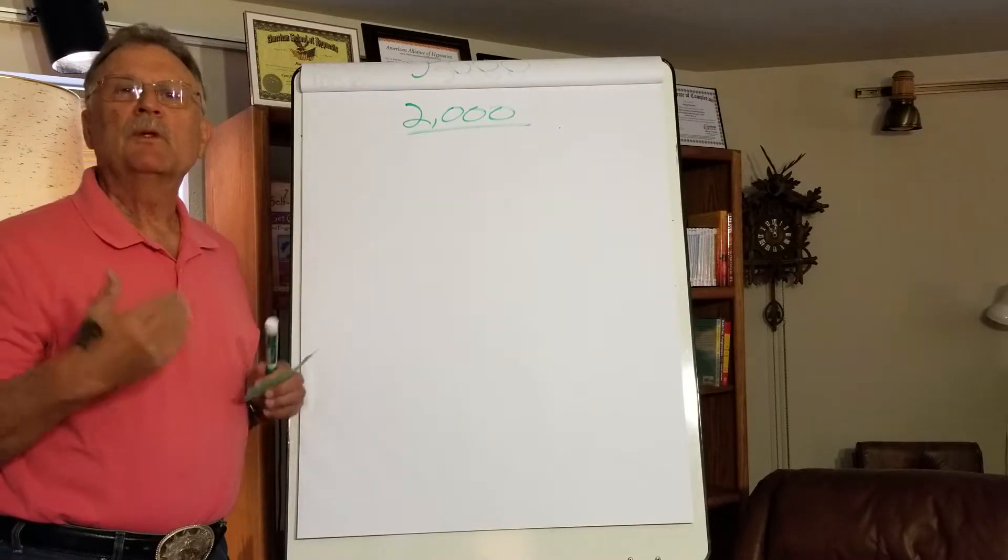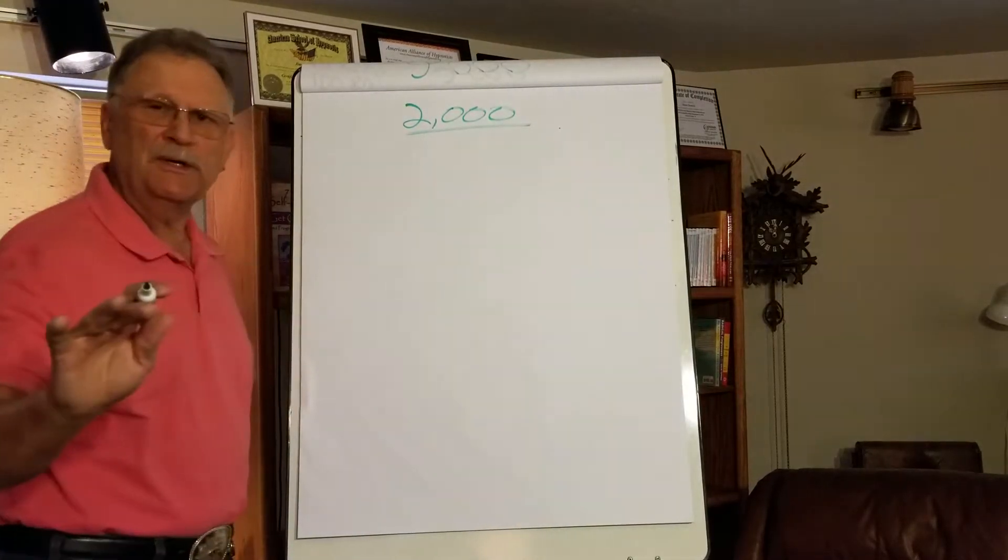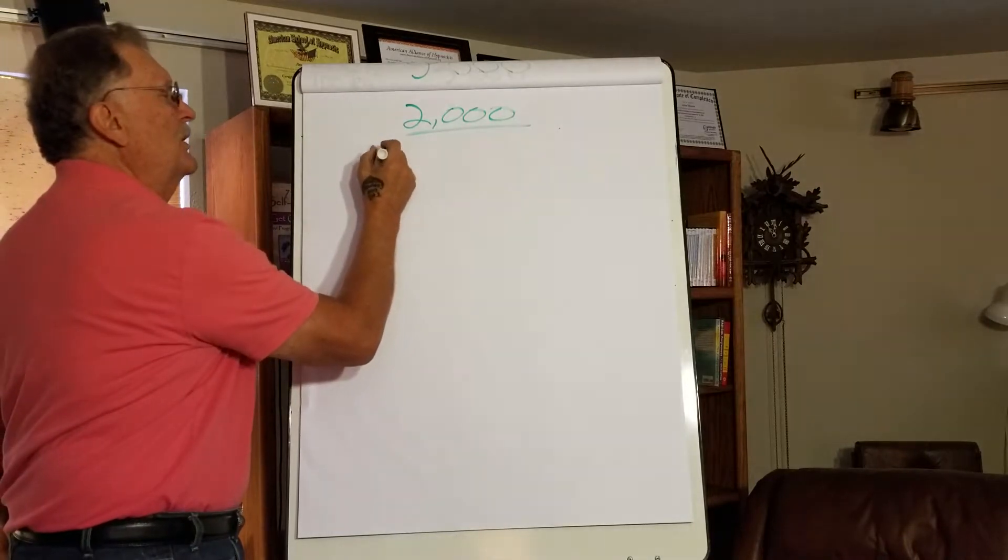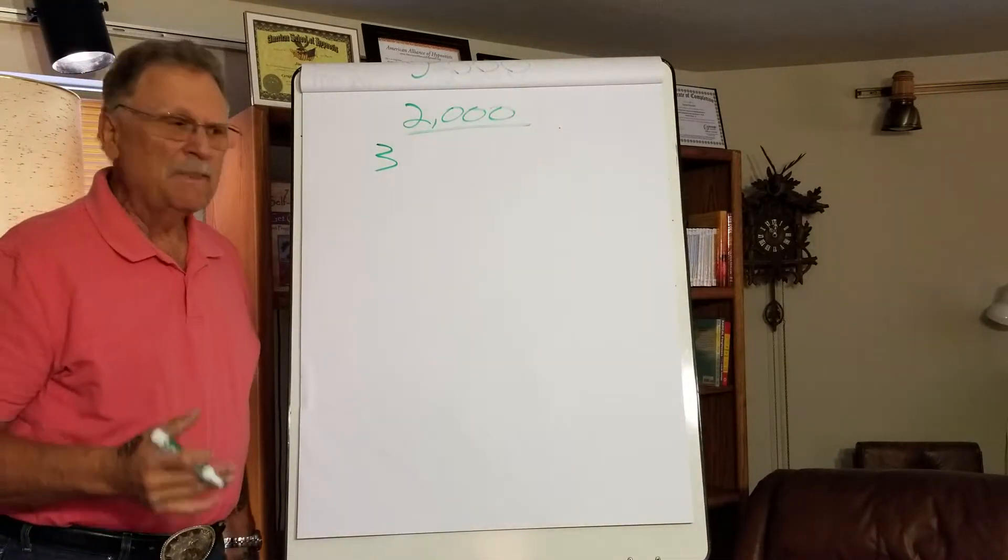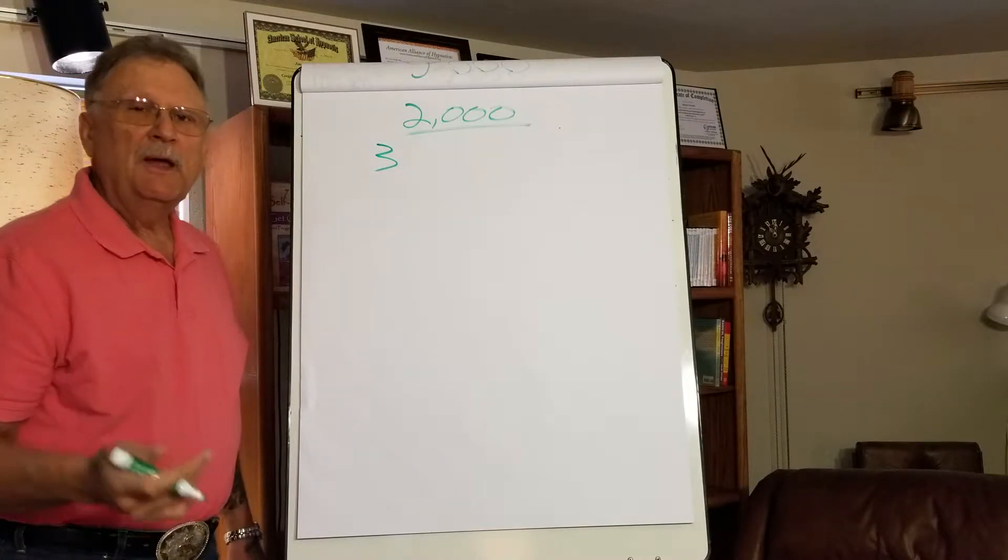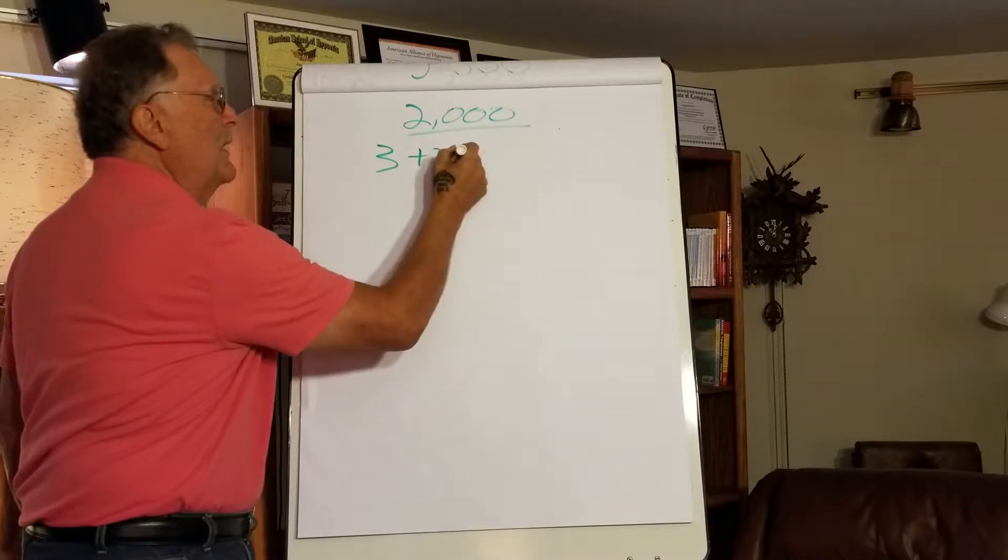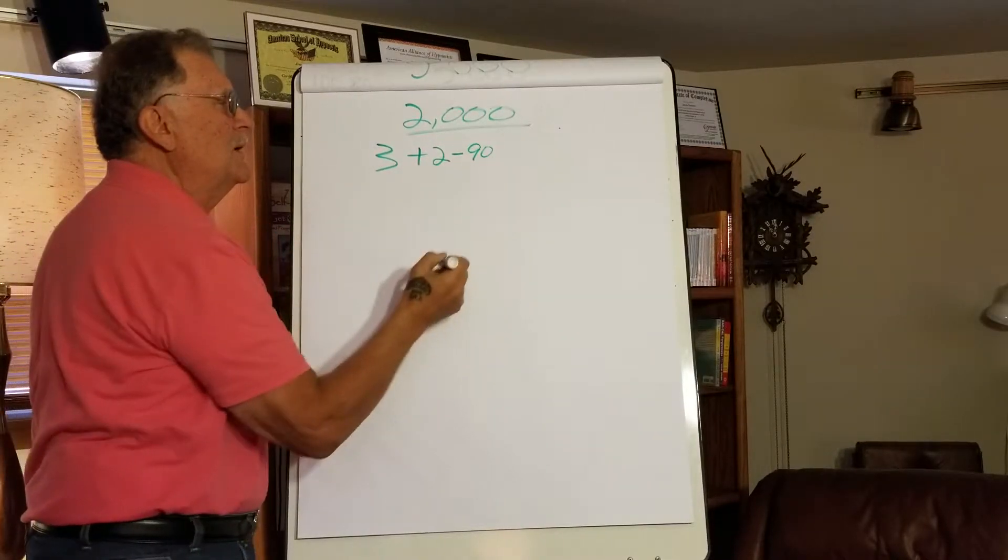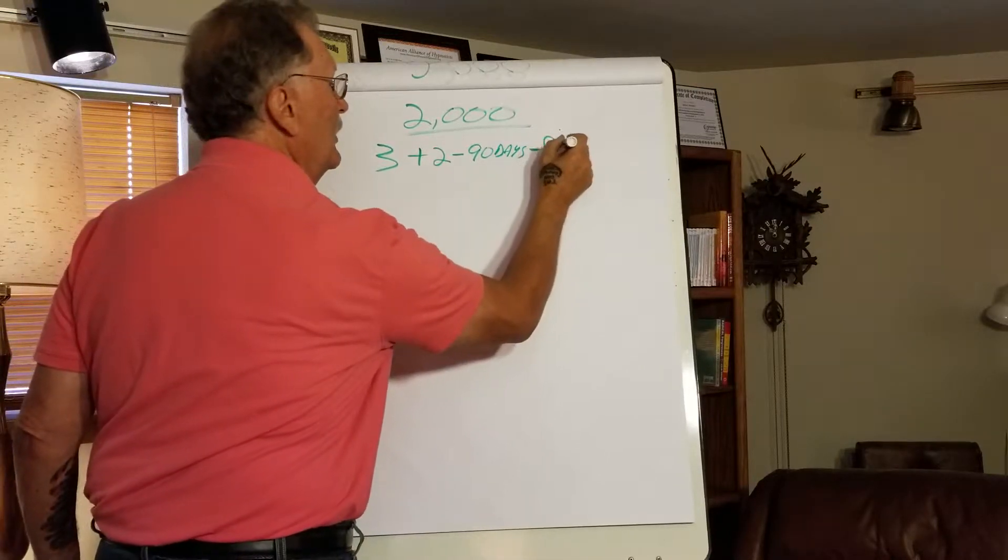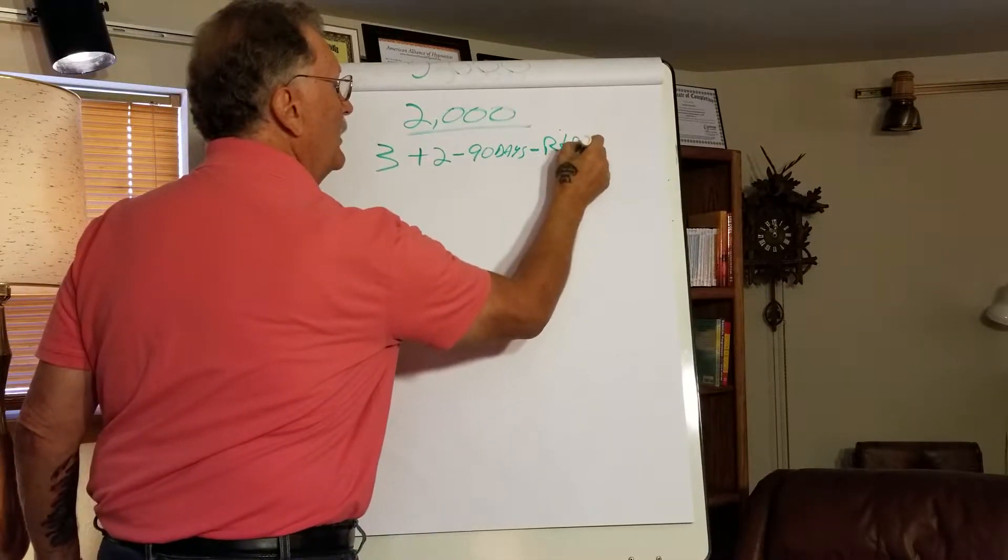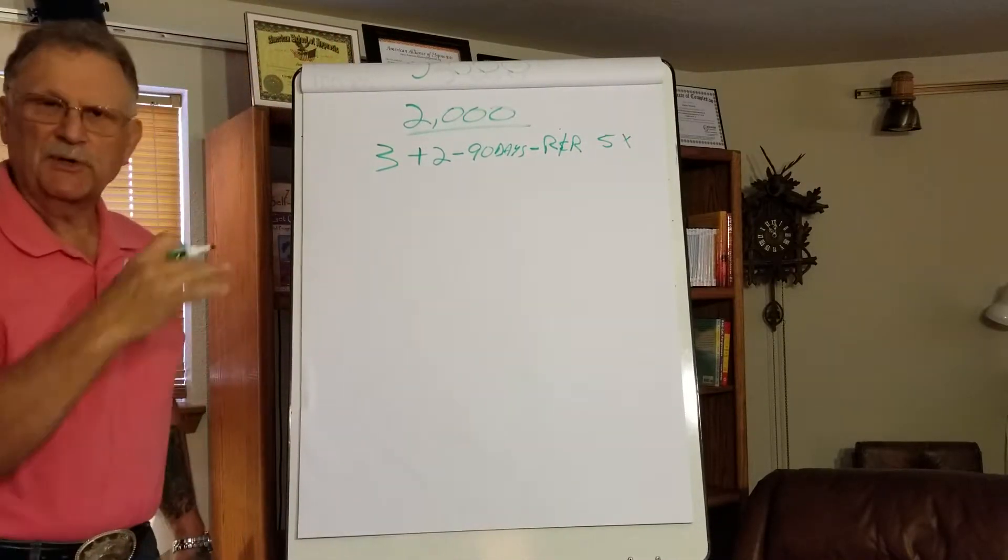Anybody can do that. So what are the steps? Here you go. To do this, all you really need to do is know that you're going to go out and you're going to start by introducing three people to fantastic products that they want and then add two more and do that in about 90 days. And then what you're going to do is what we call rinse and repeat five times.